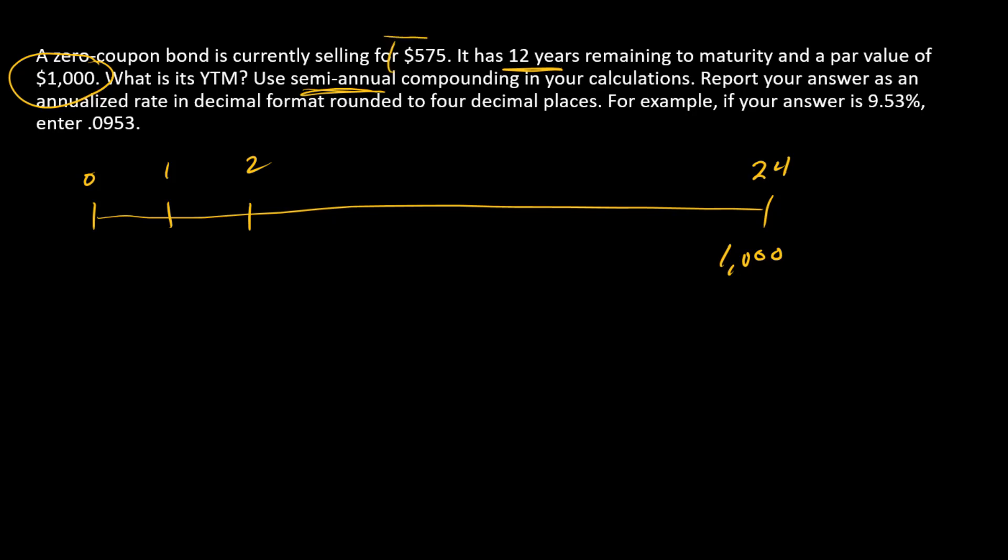The other piece of information we have here is the price. And so that's the same thing as the present value of all promised future cash flows. And so here, we simply have a present value of a single cash flow problem. And so present value is 575.